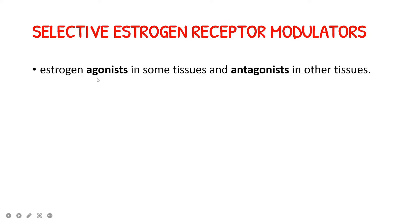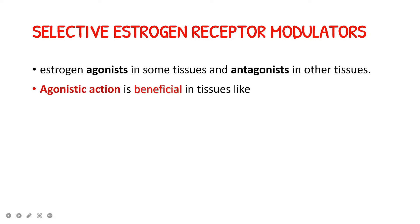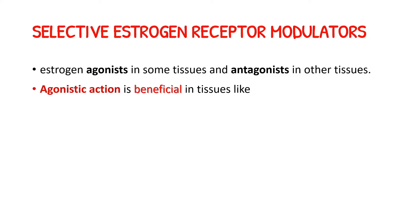Selective Estrogen Receptor Modulators are agents having estrogen agonistic activity in some tissues, as well as antagonistic activity in other tissues. In specific tissues they act as estrogen agonists, and in other tissues they produce estrogen antagonistic activity — that is why the name is Selective Estrogen Receptor Modulators.